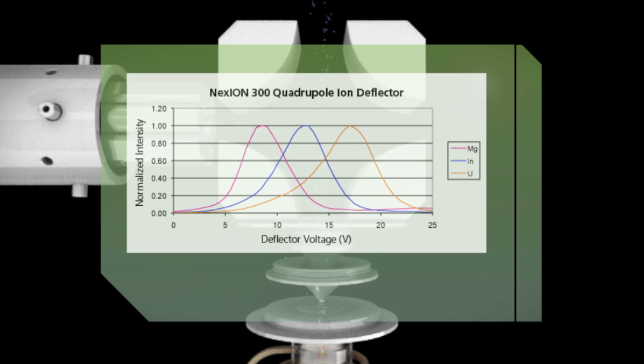The quadrupole ion deflector is the only filter of its kind that allows you to adjust your mass bandpass on the fly, automatically, to maximize sensitivity for every element in a run.